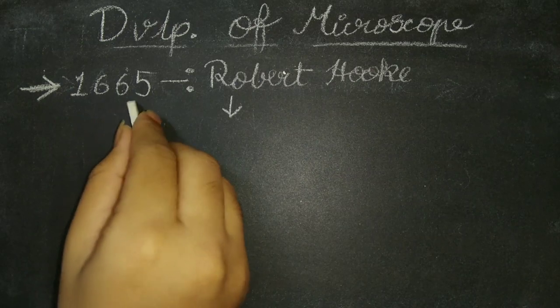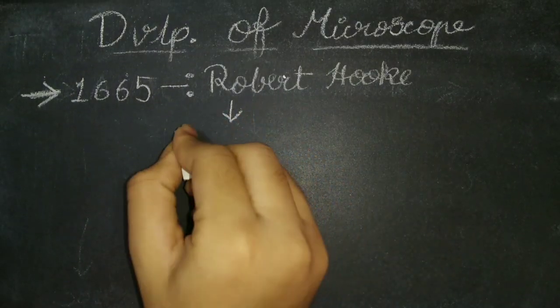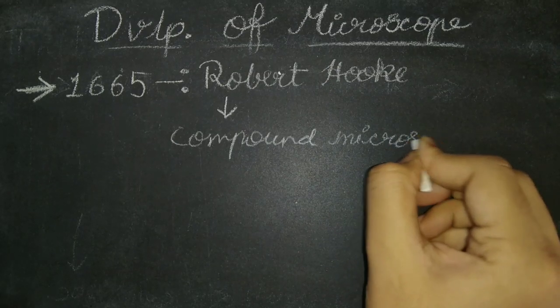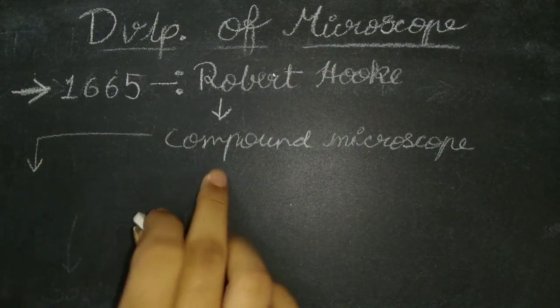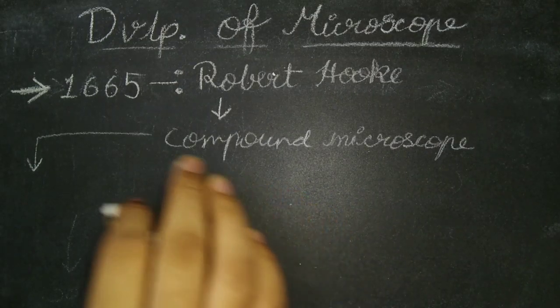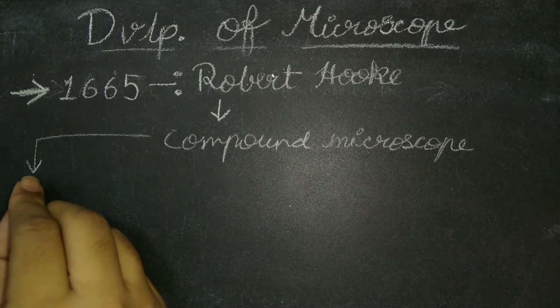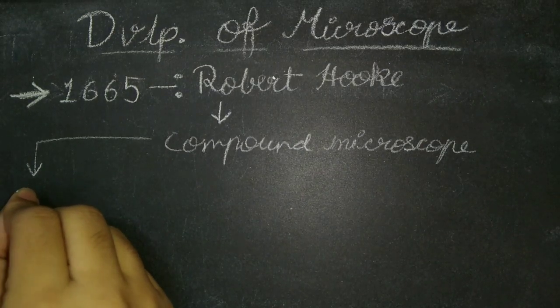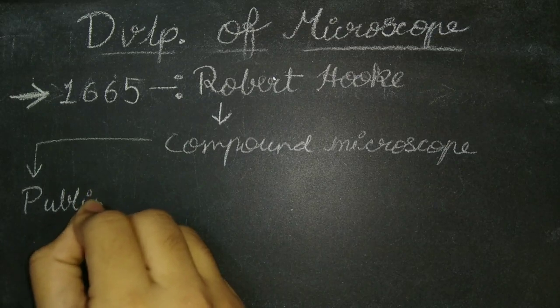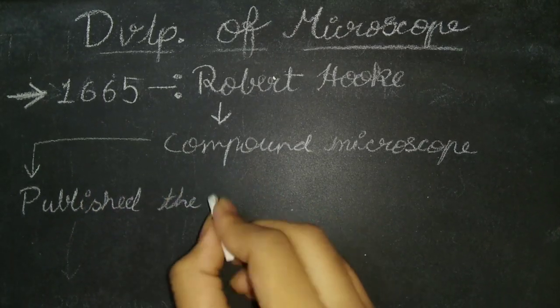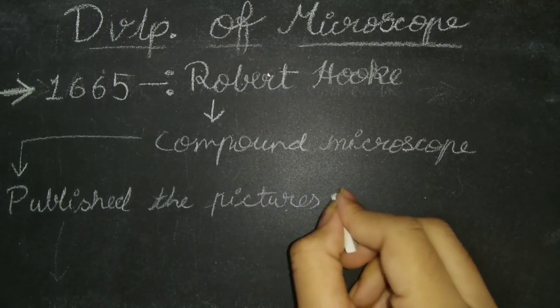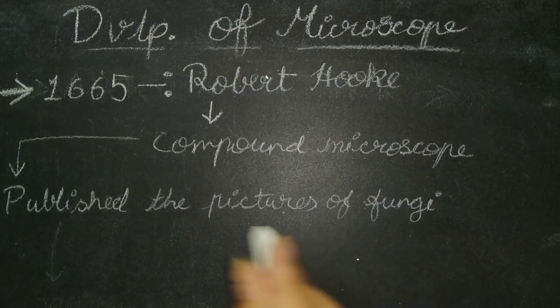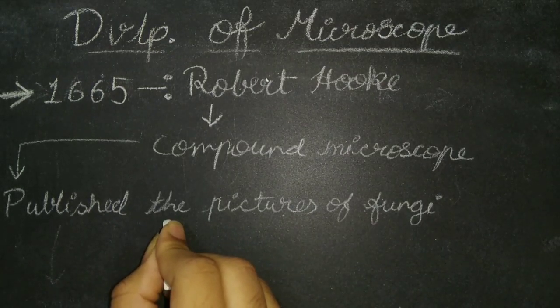In 1665, Robert Hooke constructed a compound microscope. The compound microscope which he constructed was the forerunner of our present compound microscope. That is, we can say that it was the ancestor of the present day compound microscope. Also, he published the pictures of the fungi which confirms the several reports of Leeuwenhoek.